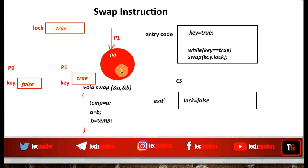If any one process is inside the critical section, lock will be true, so any process trying to enter will receive that true value in its key and will not be able to enter. Moreover, the swap instruction is atomic or indivisible, so there is no chance that a preemption will occur between these instructions. Also, if two processors in a multiprocessor environment try to execute these instructions simultaneously, they will be executed sequentially — either P0 first then P1, or P1 first then P0. So there is no chance that two processors access the lock variable at the same time. As a result, mutual exclusion is guaranteed.